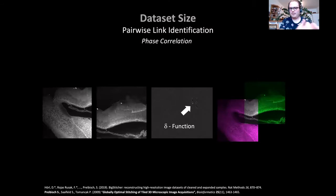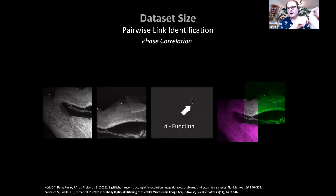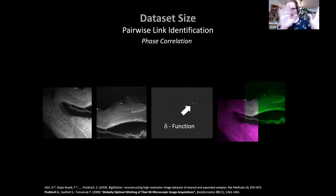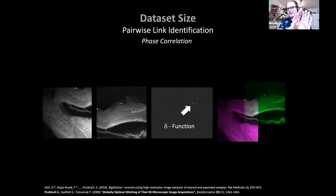Many of the subsequent steps can be done on downsampled versions of the images. We offer the possibility to re-save data in a multi-resolution pyramid format where you save not just the full-resolution image but also downsampled versions in formats like HDF5 or N5. That way you can do lots of the work later on a smaller version, which reduces compute time significantly. Once we are able to load the image data, the first task is to find out how pairs of images are transformed relative to each other.